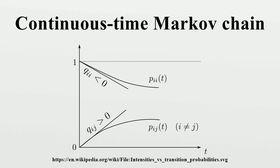The solution to the forward equation is given by a matrix exponential. In a simple case such as a CTMC on state space {1, 2}, the general Q matrix is a 2×2 matrix with parameters α, β > 0, and the forward equation can be solved explicitly. However, direct solutions are complicated to compute for larger matrices, so the fact that Q is the generator for a semigroup of matrices is used.